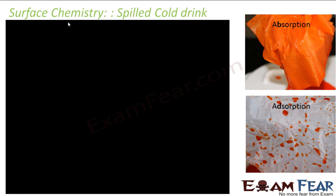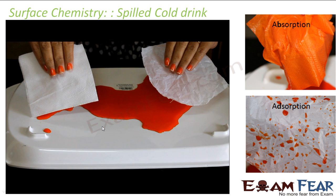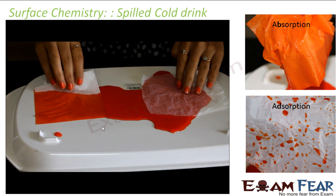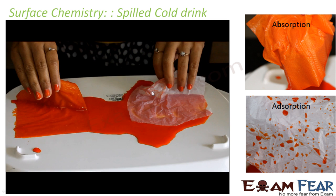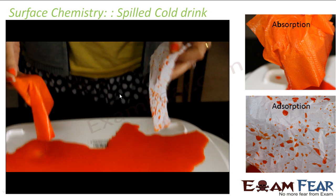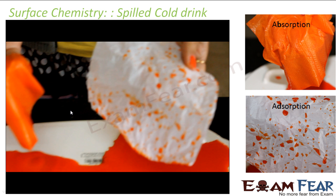Another good example: there is a cold drink spilled. On the left-hand side is a tissue paper, and on the right-hand side is a plastic. On the left-hand side, the whole cold drink is absorbed by the tissue paper. But on the right-hand side, the cold drink is only on the surface of the plastic — it didn't go inside the plastic. The red cold drink has not gone inside the plastic, but with the tissue paper, the whole cold drink is absorbed.